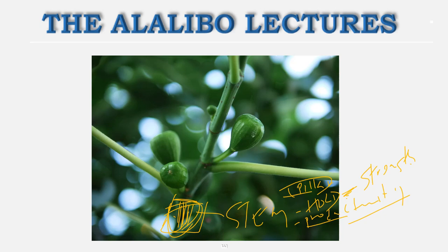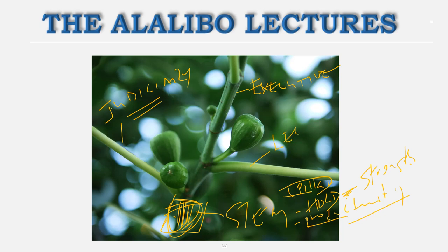On this stem you have the three branches of government. The stem represents the people — the people are the ones holding the branches of government. So on this stem you have the judiciary as one branch, the executive as the second, and the legislature as the third. In some countries it's called parliament — in the UK and Canada it's parliament, in the US it's the legislature.